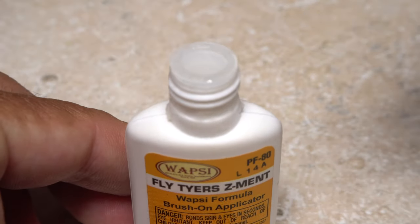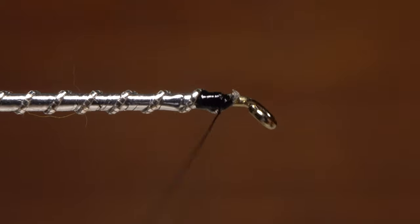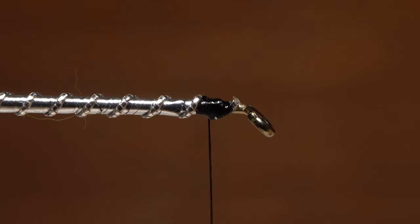Once again, it's a good idea to reach for the superglue and apply just the smallest amount to save your work. Then, take tight thread wraps rearward to about two eye lengths behind the back edge of the hook eye.